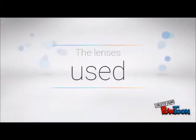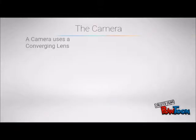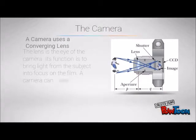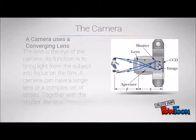Next up is the lenses used. The lens is the eye of the camera. Its function is to bring light from the subject into focus in the film. A camera can have a single lens or a complex set of lenses. Together with the shutter, the lens controls the amount of light that enters the camera.